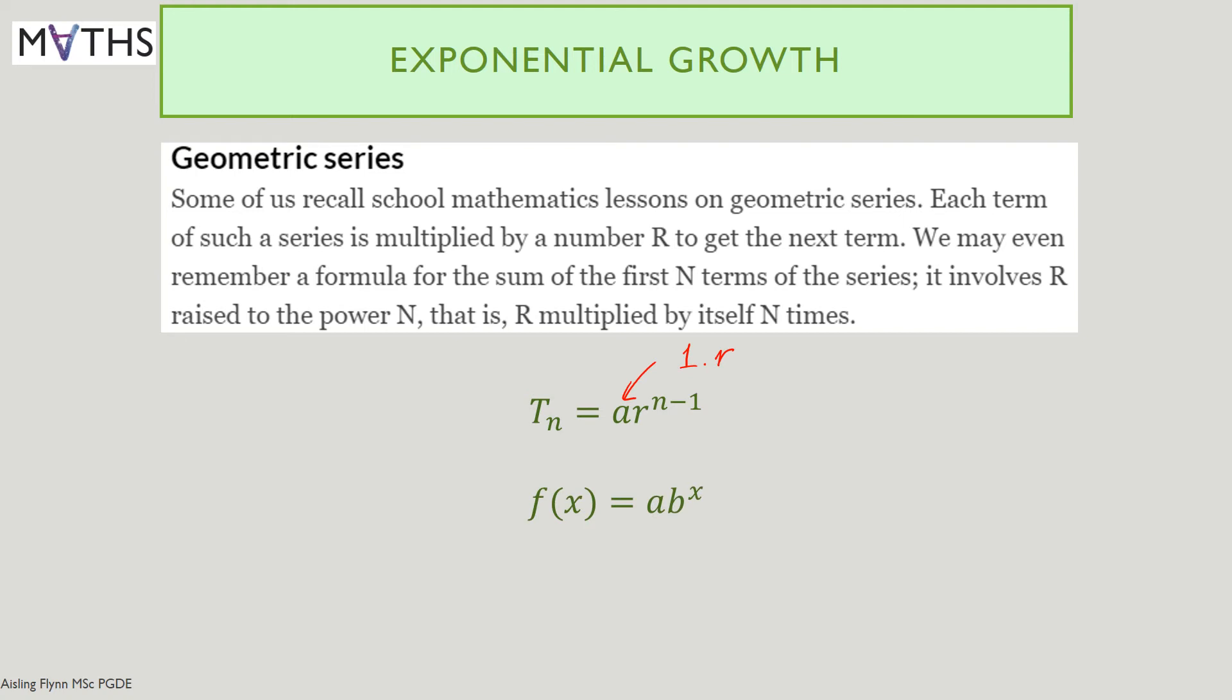In functions, we write it like this: the function of x equals a multiplied by b to the power of x. So a will be multiplied by b many times. This would be the starting number of cases, for example, and b takes the place of r in this case. You would multiply it by r for each subsequent day. Sometimes, instead of f of x to describe what you put onto the graph, the variable y is used. So y is a function of x.